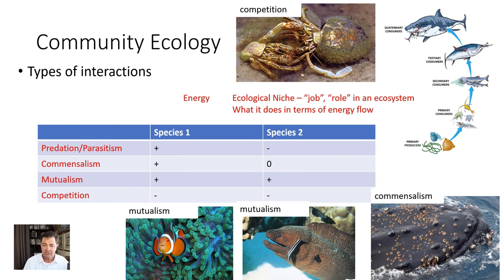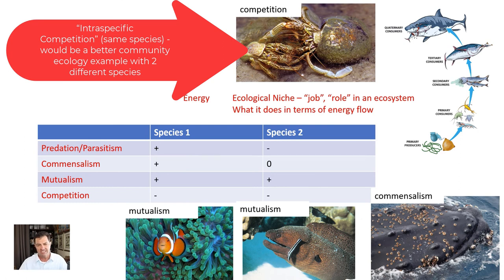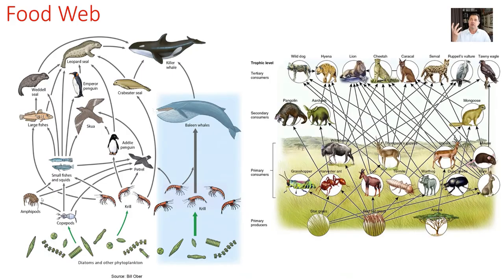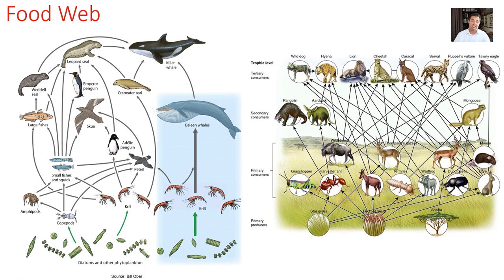In competition, both organisms would be better off if the other wasn't there. Here we have two hermit crabs fighting over a shell — if there was only one individual there would be plenty, but because there are two, they're fighting over it. This is an example of intraspecific competition. When we talk about ecosystems, one problem with the food chain is that it's often too simplistic. A food web shows that one organism might feed on many different things, making it much more complex and realistic.